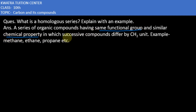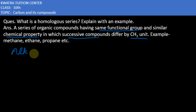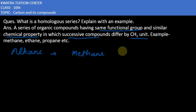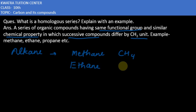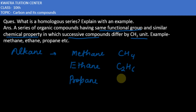Successive compounds means the next compound differs by a CH2 unit. Looking at the alkane homologous series: the first member is methane with the formula CH4, the second member is ethane with the formula C2H6, and the third member is propane with the formula C3H8, and so on.